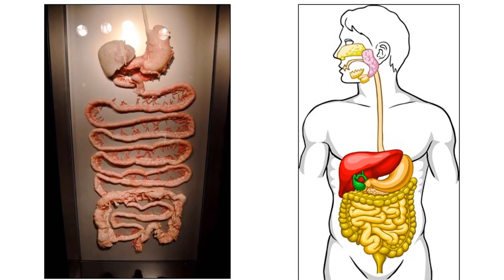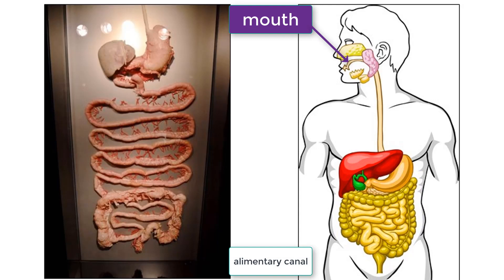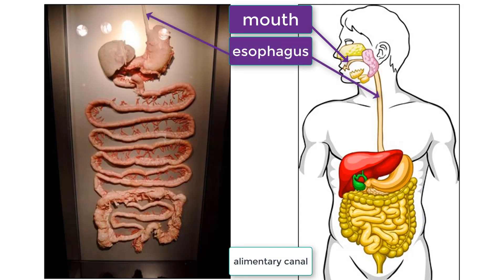These two images depict real and digitally created digestive systems. Let's label the structures and talk about their functions. Starting with the organs of the Alimentary Canal, when food enters your mouth, you physically break down food molecules with your teeth and send it down your esophagus when you swallow. Your esophagus muscles squeeze in a wave-like rhythm and push the food into your stomach.